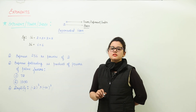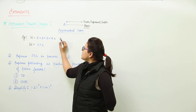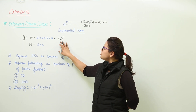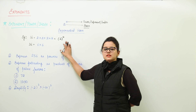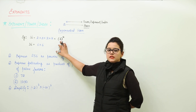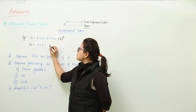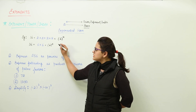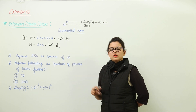For example, 16 can be represented as 2 into 2 into 2 into 2, which means it can be written as 2 raised to the power 4. This is spoken as '2 raised to the power 4,' or '2 having exponent 4,' or 'the index is 4.' Here 4 is the index and 2 is the base. Similarly, 36 can be written as 6 squared, or 6 raised to the power 2.